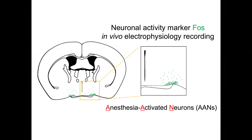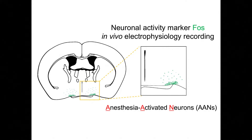We named this distinct population of cells anesthesia-activated neurons, or AANs. The majority of AANs sit in a tiny spot of the brain called the supraoptic nucleus. There is also a sparse population of AANs scattered around nearby areas. The entire set of neurons is located within the hypothalamus, a master regulator of bodily homeostasis and hormone release.